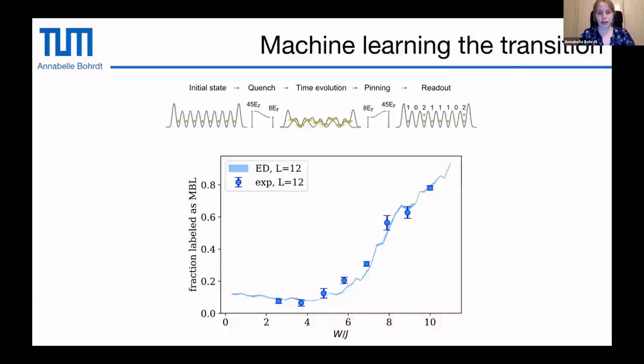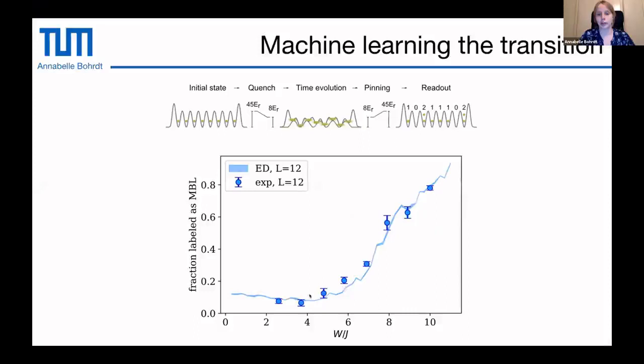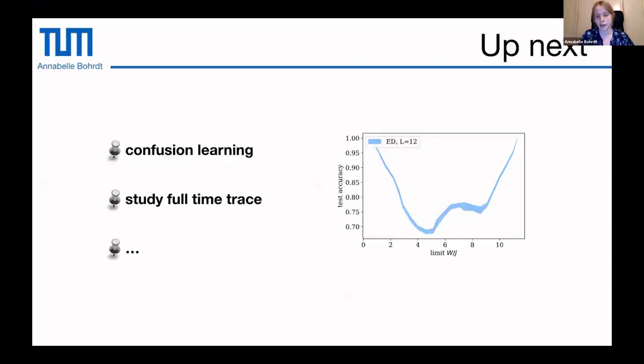We are also looking into the confusion learning scheme, which can find a drastic qualitative change in data without any prior knowledge of there being a phase transition. Results look consistent with the supervised learning method. We can also study the full time trace instead of just the final time step, and there are many other things one can do with quantum gas microscope snapshots.